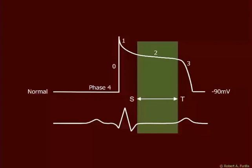If there's an injury, the first thing we notice is that the cell cannot maintain its membrane potential — it begins to depolarize. In addition, because of the smaller concentration gradient between inside and outside, the action potential is also reduced in amplitude. Wherever you see a difference in voltage, there will be a current flowing, and with that current you can describe a vector.